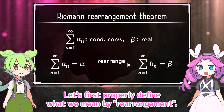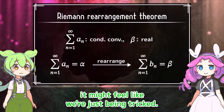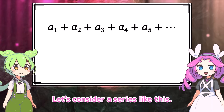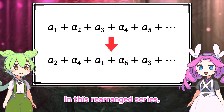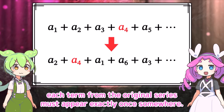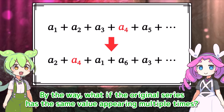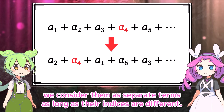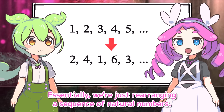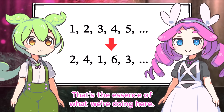Before proving, let's first properly define what we mean by rearrangement. Let's consider a series, and rearrange the terms to create a new series. In this rearranged series, each term from the original series must appear exactly once somewhere — that's what we call a rearrangement of a series. Even if multiple terms have the same value, we consider them as separate terms as long as their indices are different. Essentially, we're just rearranging a sequence of natural numbers — a sequence where each natural number appears exactly once somewhere.